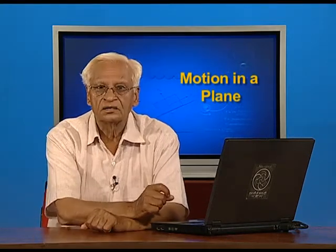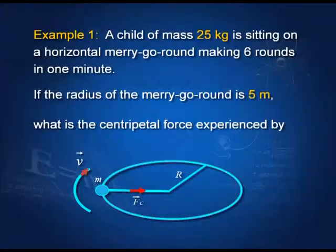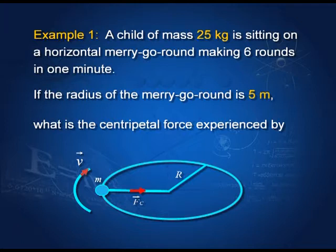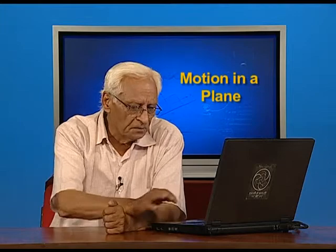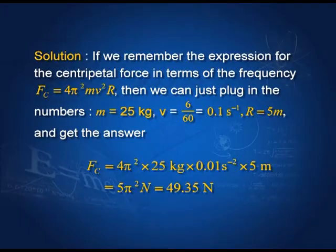We will now start with these problems. A child of mass 25 kilograms is sitting on a horizontal merry-go-round making 6 rounds in 1 minute. If the radius of the merry-go-round is 5 meters, what is the centripetal force experienced by the child? This is straightforward. If you remember the formula 4π²mν²r, then you can just plug the numbers and get the force.